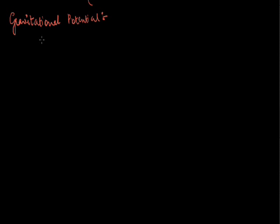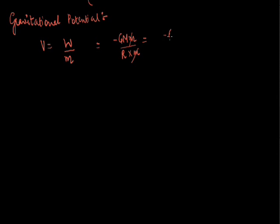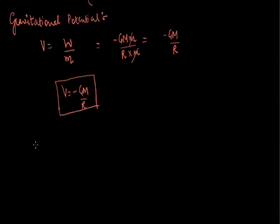Next let us talk about gravitational potential. Gravitational potential can be defined as the work done per unit mass in bringing a body from infinity to any point inside the gravitational field. So gravitational potential V is the work done in bringing a unit mass from infinity to any point. We have calculated the work done to be minus GMm/r; dividing by mass m, I get minus GM/r. This is the expression for gravitational potential at any point, that is V = minus GM/r.